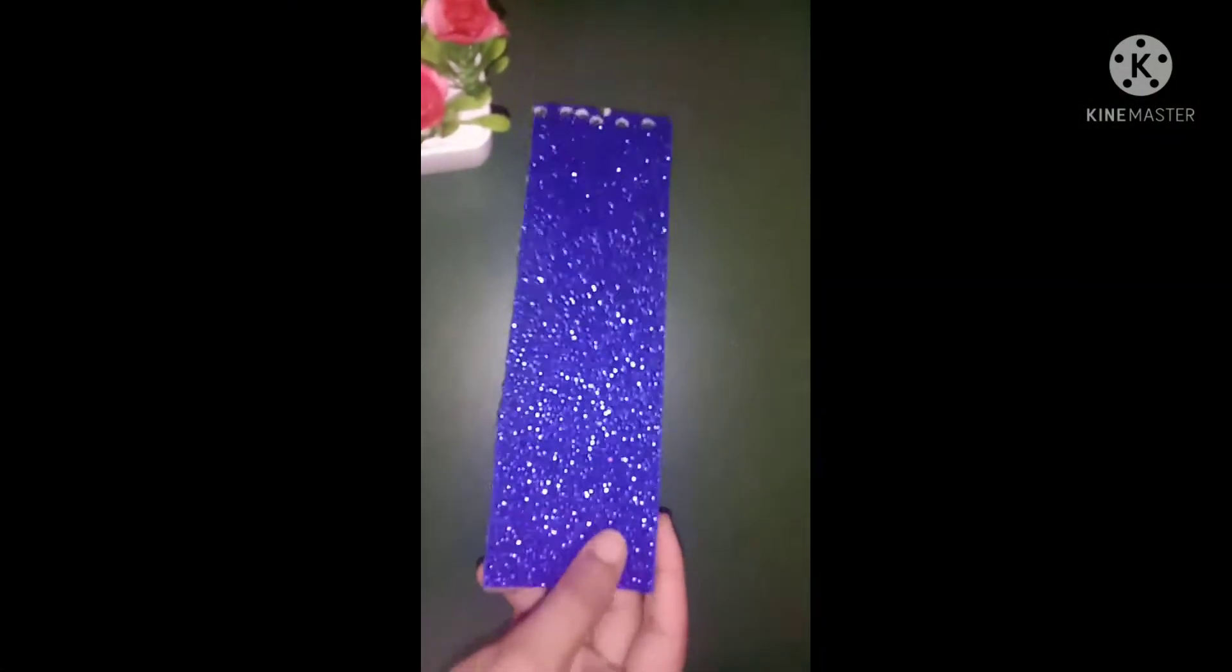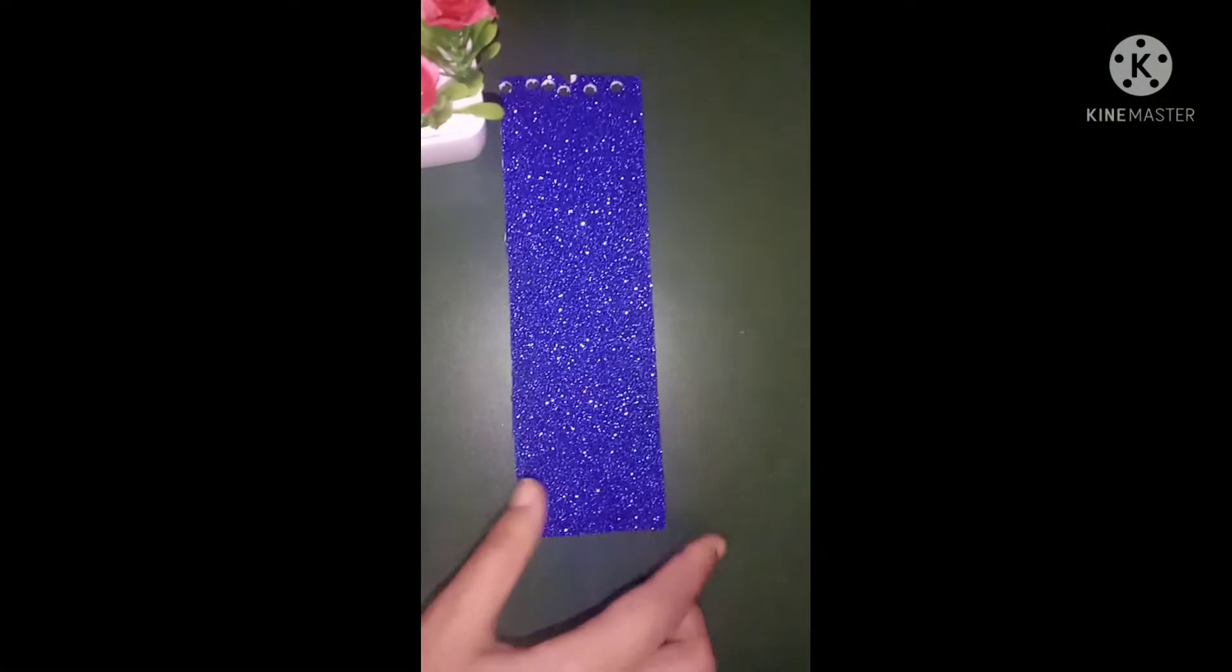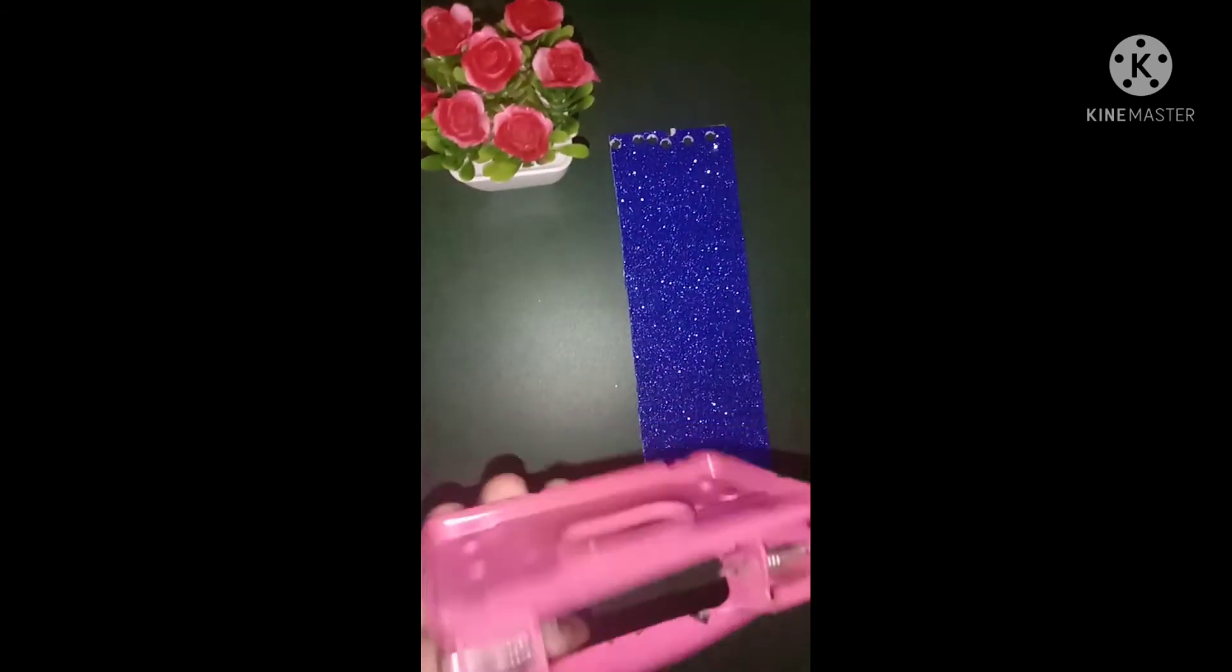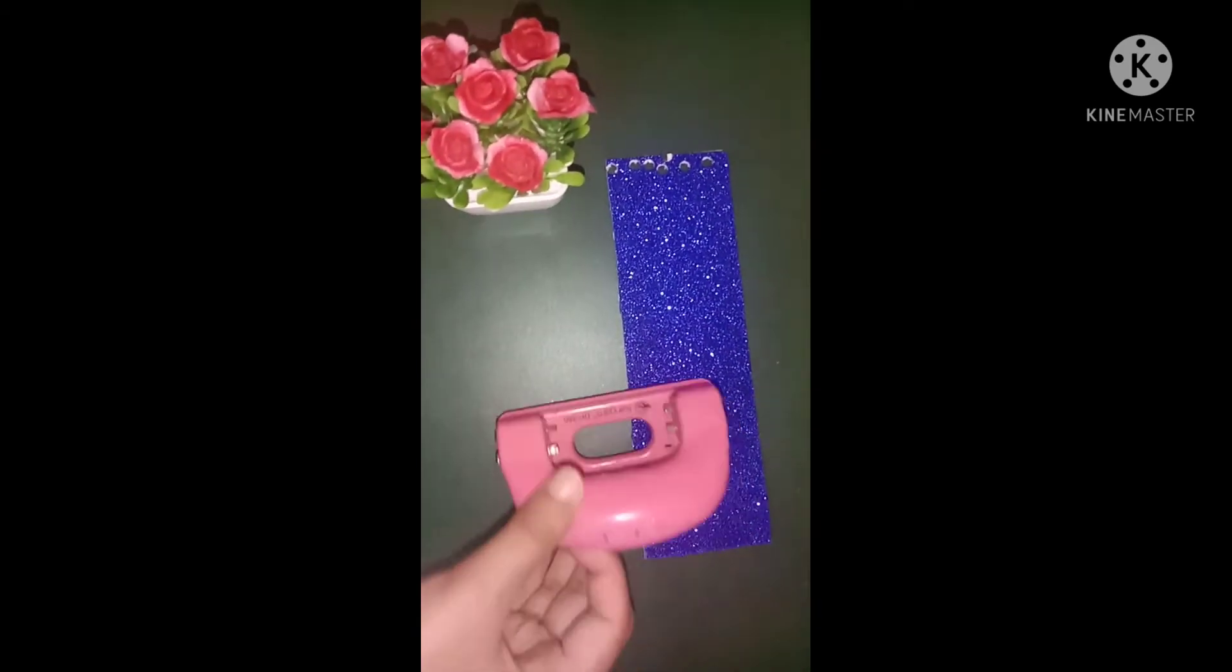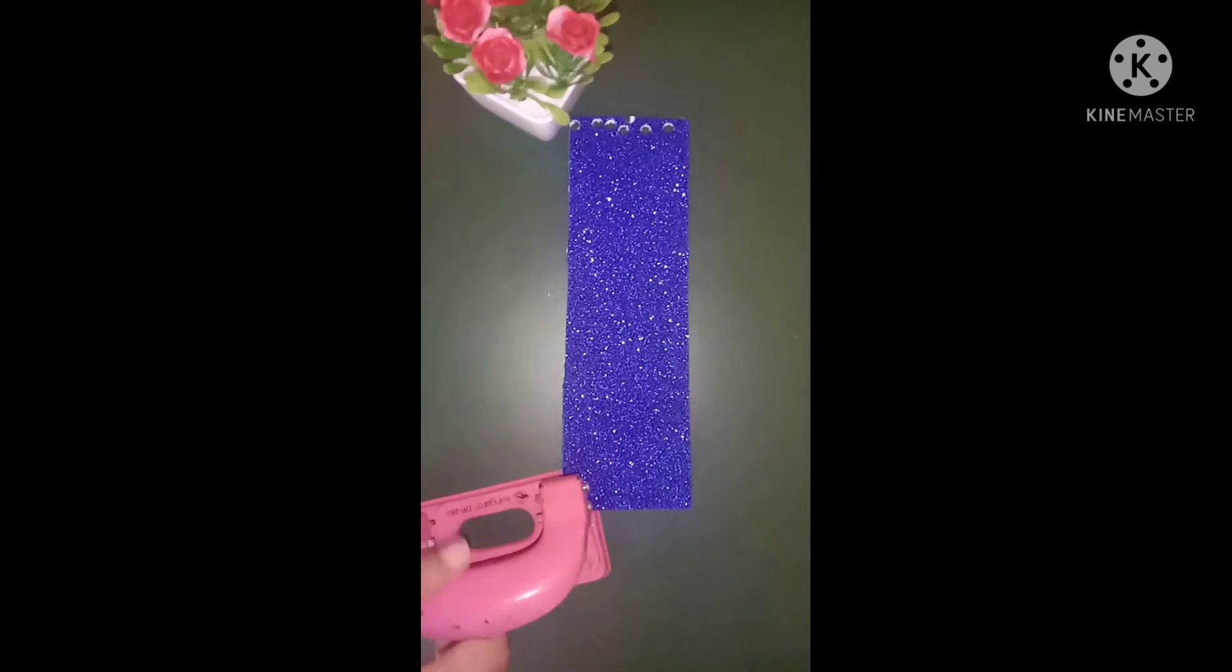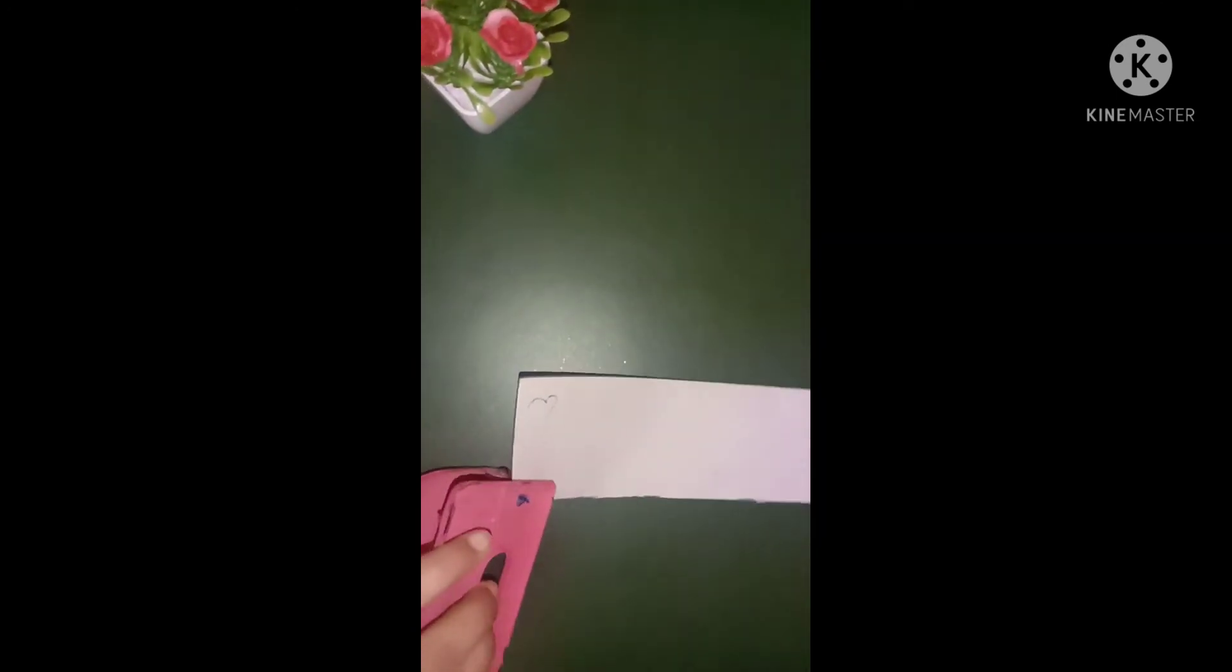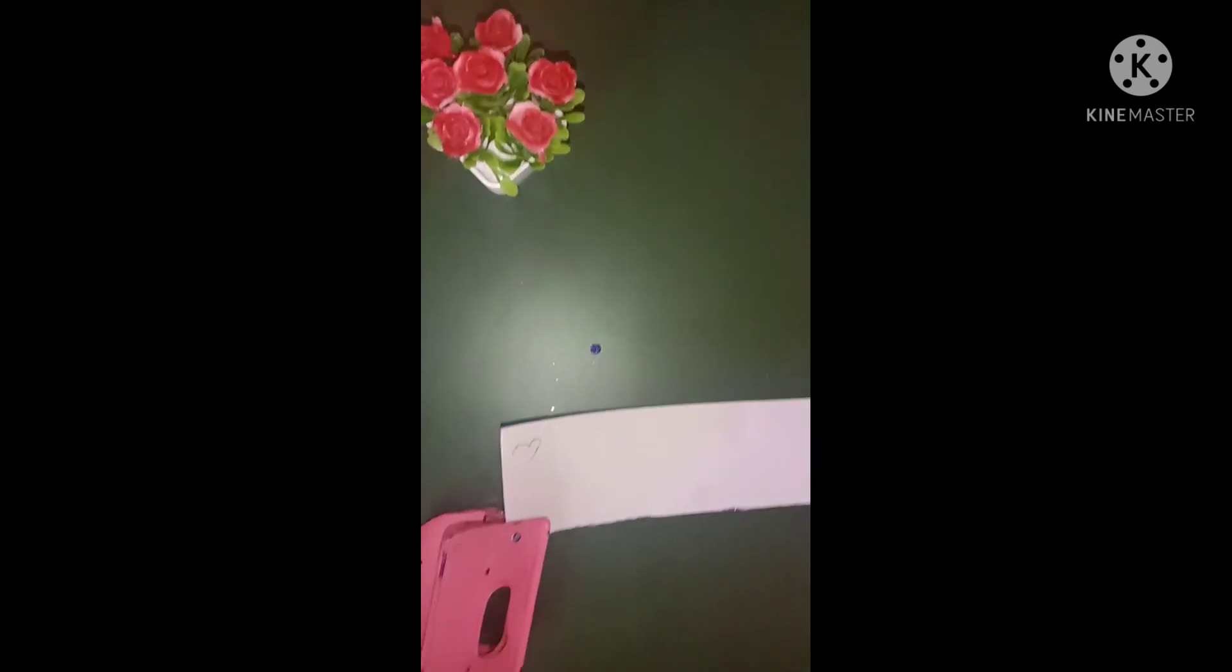Now we are ready for the last and final method. I am going to use sticky foam sheets. I am going to put a sticker on the other side. I am going to use a punchy machine to make round sticky beads.